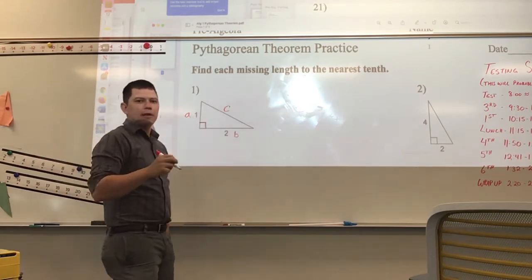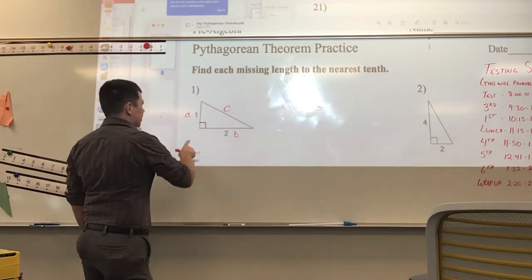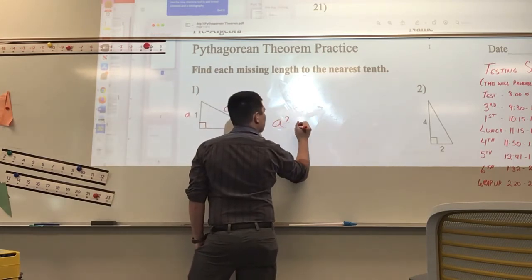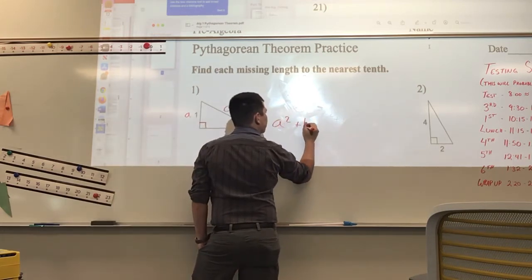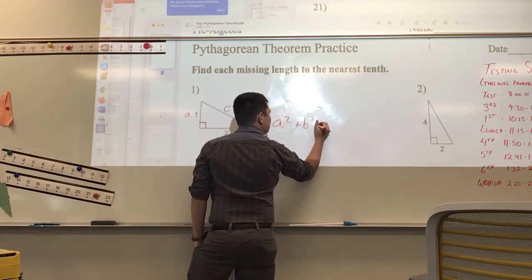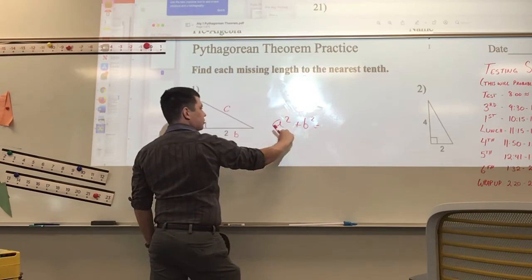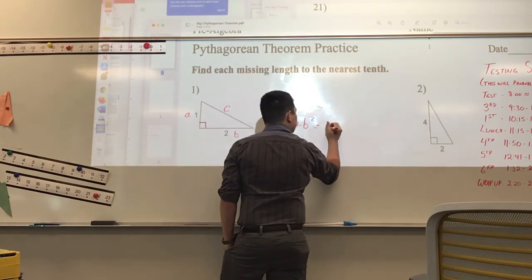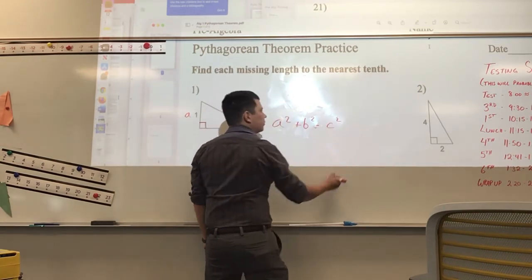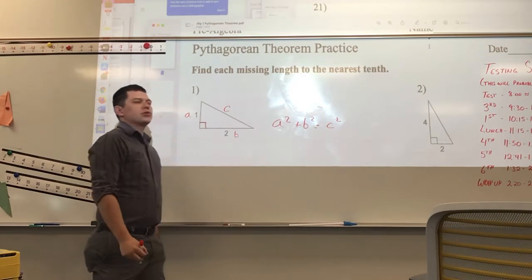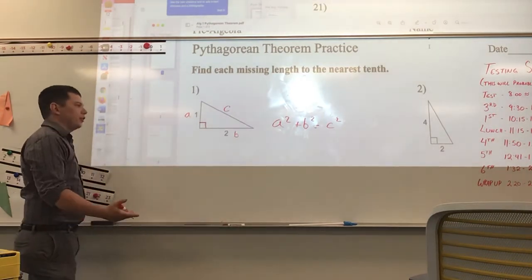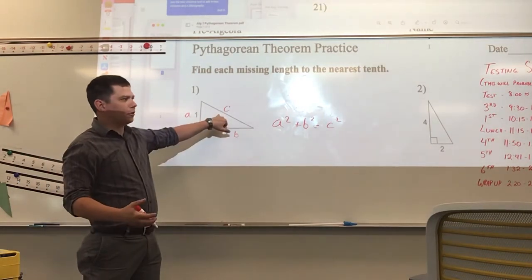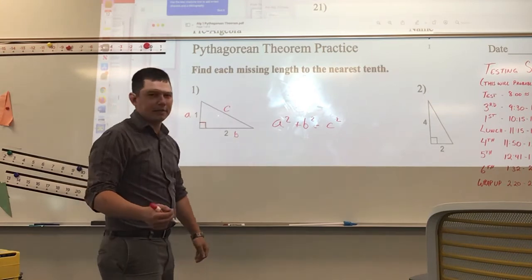Pythagoras figured out that if we take A squared plus B squared — those lengths squared added together — it equals C squared. So now we can use the Pythagorean Theorem to calculate the length of the missing side.